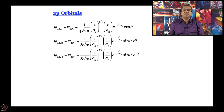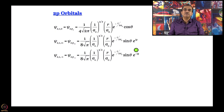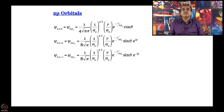Now we come to a peculiar problem. We handled 2pz, but the moment we try to go to the other two orbitals — for m=+1 and m=−1 — we encounter the problem that the φ part of the wave function is e^(imφ), giving e^(iφ) and e^(−iφ). These are imaginary functions and we cannot draw them on a real surface.